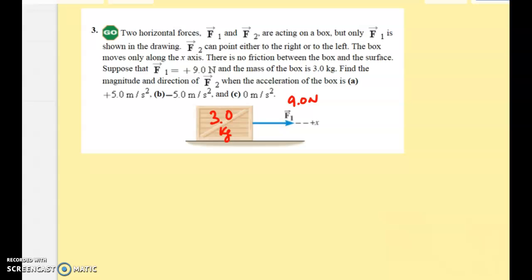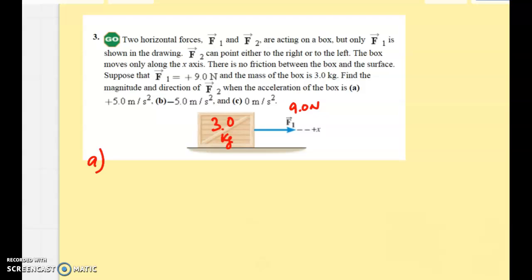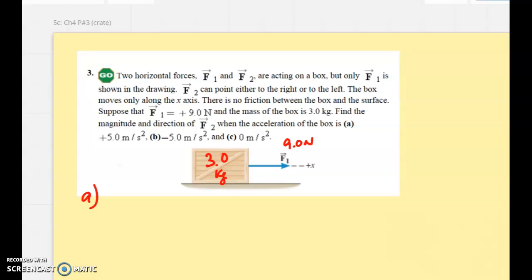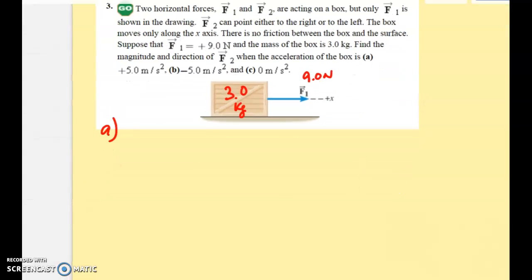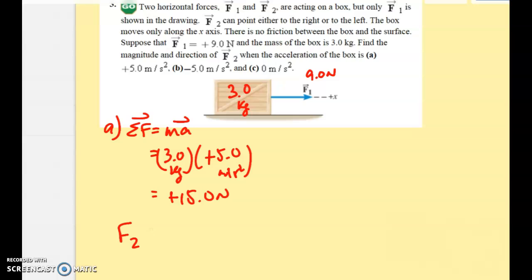So for part A, since I know that the acceleration is positive 5, then that says that I know that the net force is positive 15. How did I know that? Well, the net force is just equal to the MA, magnitude and direction. I know that 3 kilograms times, in this case, positive 5 meters a second squared. So that's going to say that I have a positive 15 newtons. Now what do I have to add on to 9 newtons to get 15 newtons? That's pretty simple. So that means that F2 must be 6 newtons to the right.